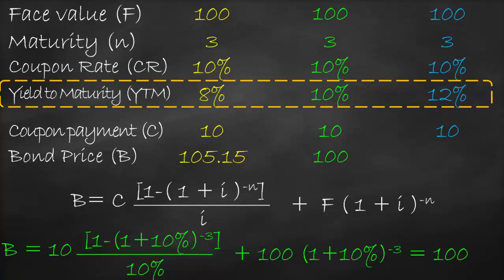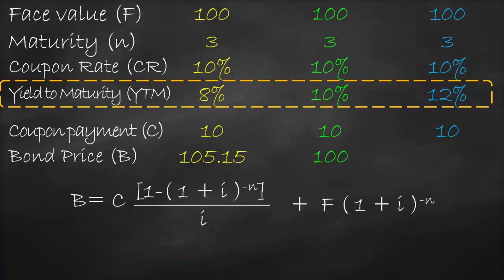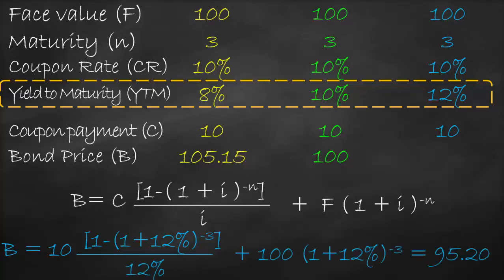For the third scenario we use exactly the same formula, but with yield to maturity of 12%. Bond price = 10 × [1 − (1 + 12%)^(−3)] / 12% + 100 × (1 + 12%)^(−3). This gives us a bond price of 95.20.